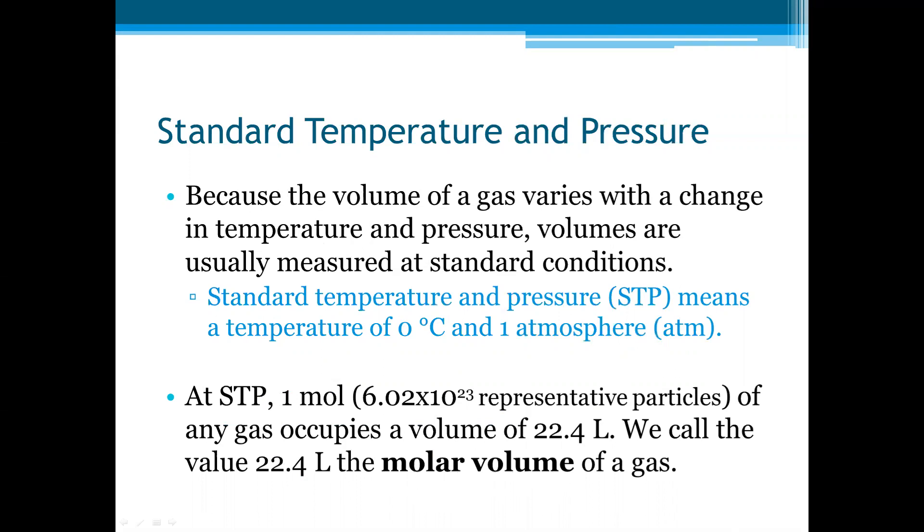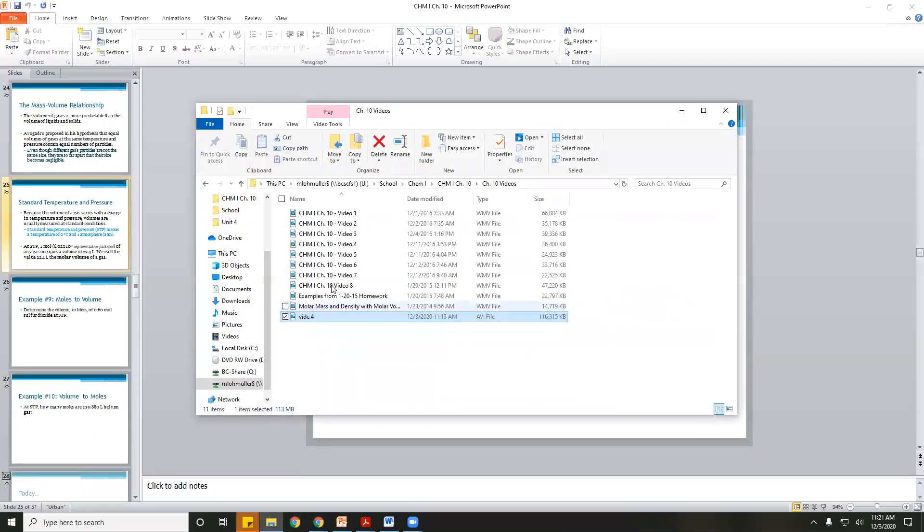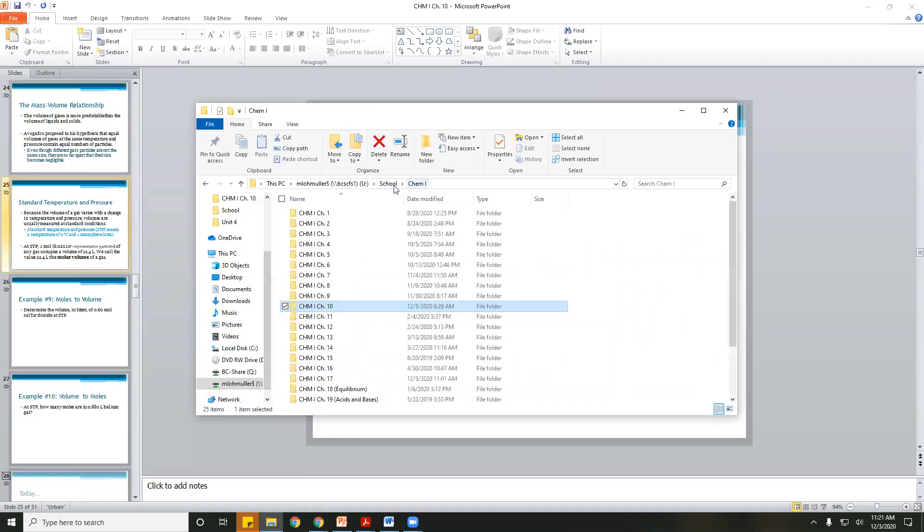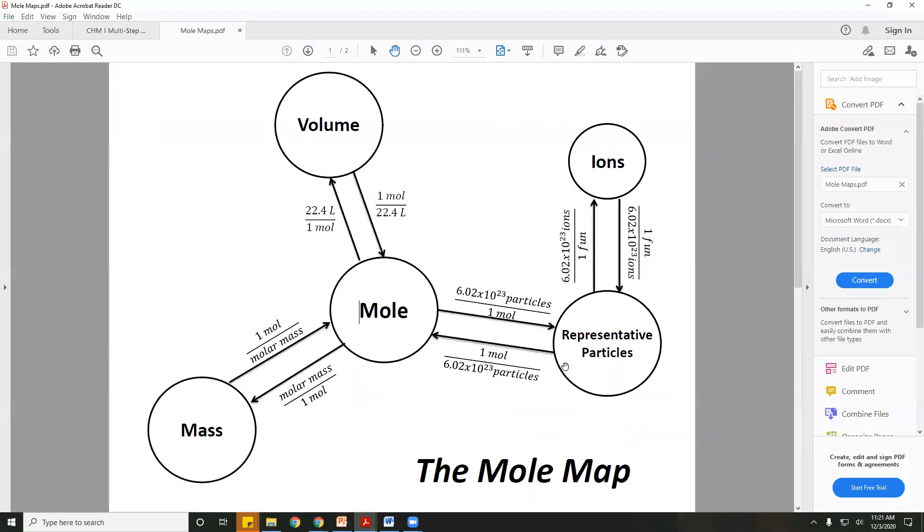And this number is what we use on the mole map to help us switch between. So we look at the mole map. With the mole map, we've got our 22.4 going between volume and moles and volume is measured in liters.